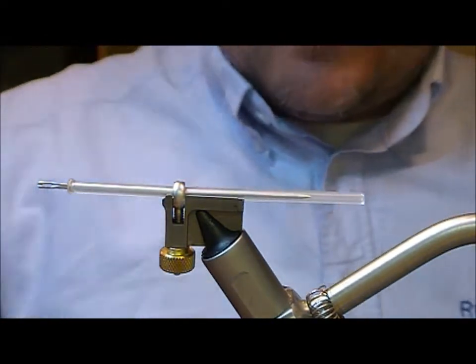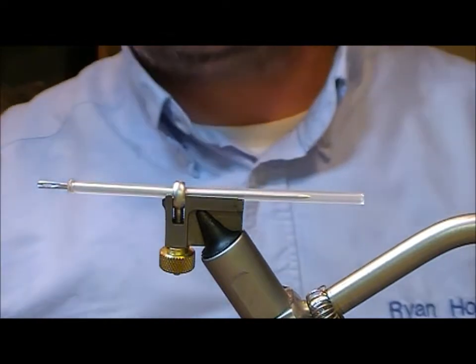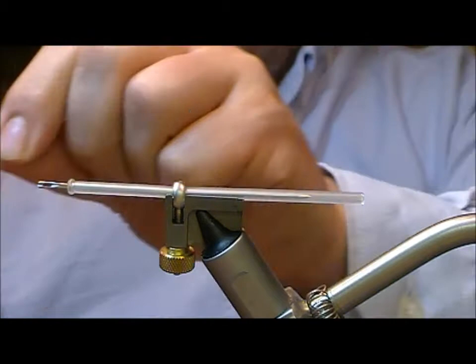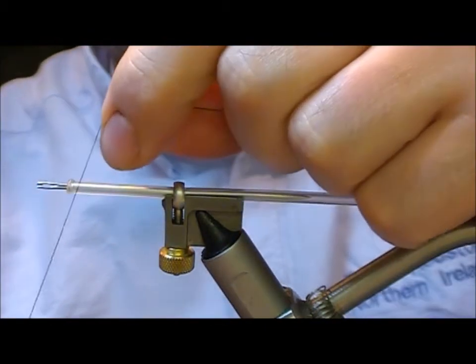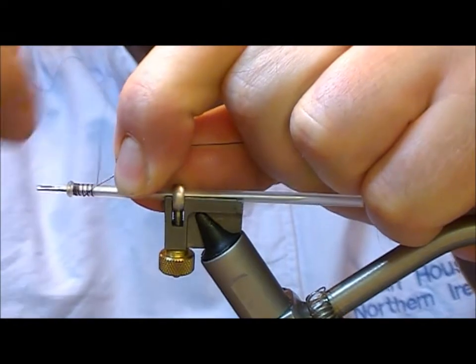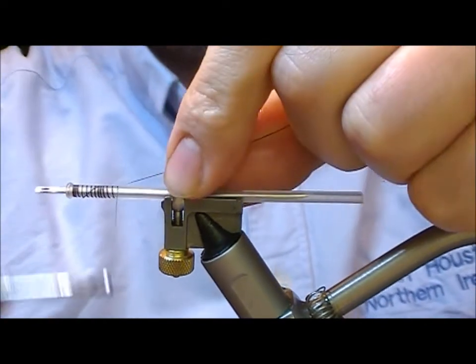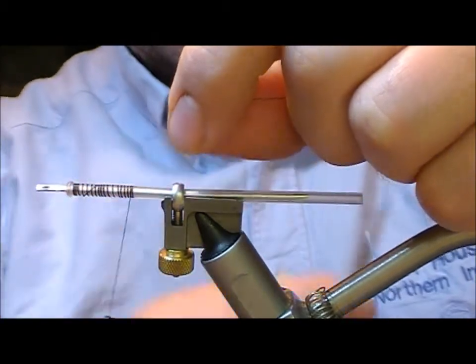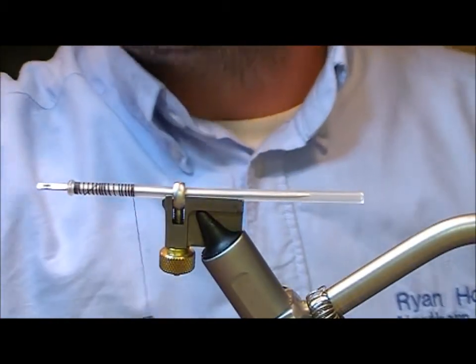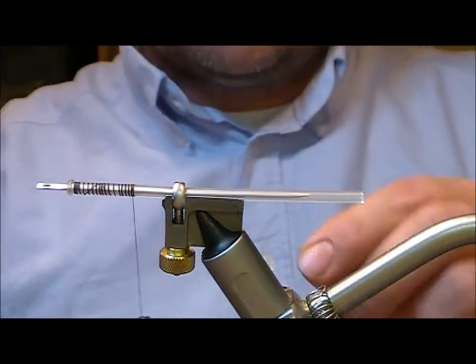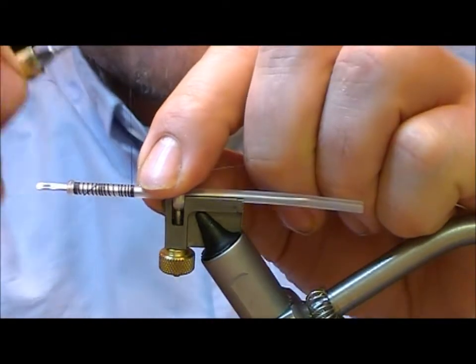Now I'll take my thread which is a black 140 denier ultra thread from UTC, put a little bit of zap-a-gap onto it just to start and then I'm going to wrap back. First thing we're going to put in is a bit of silver oval and that's going to act as our rib.